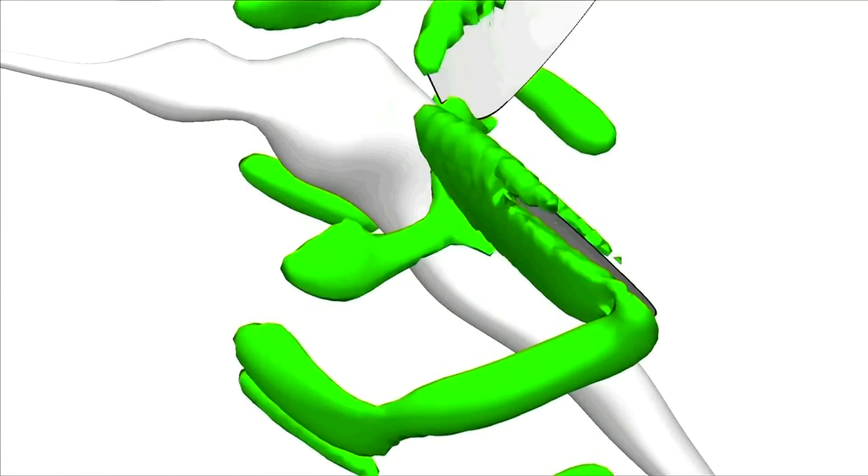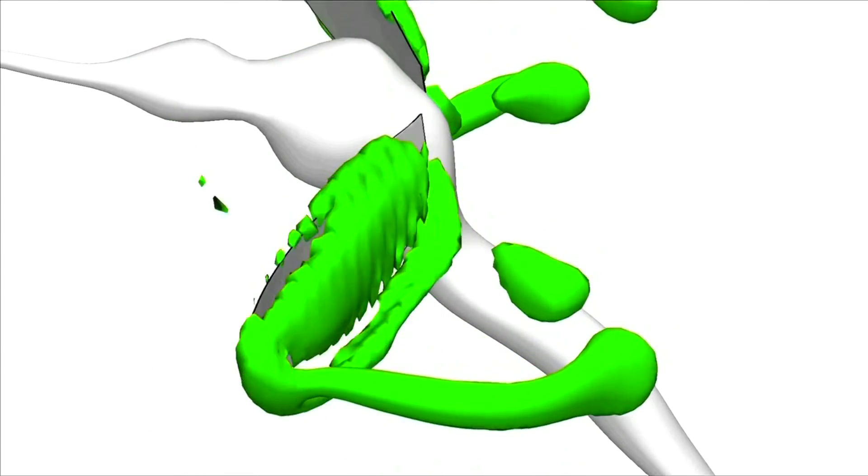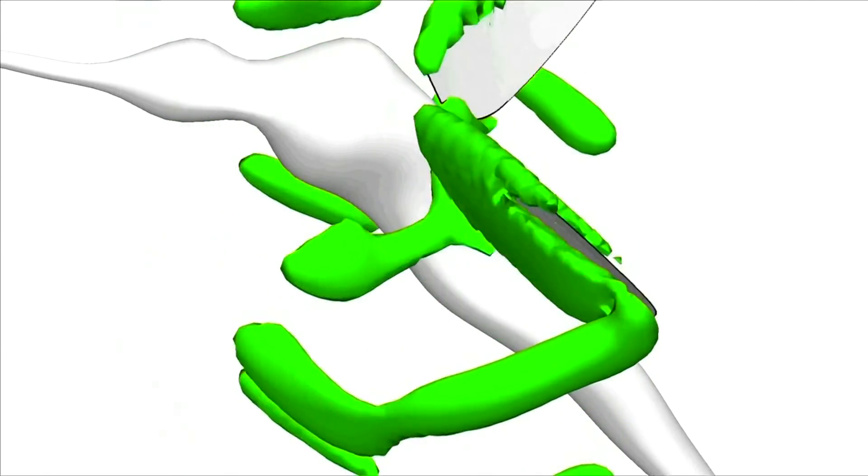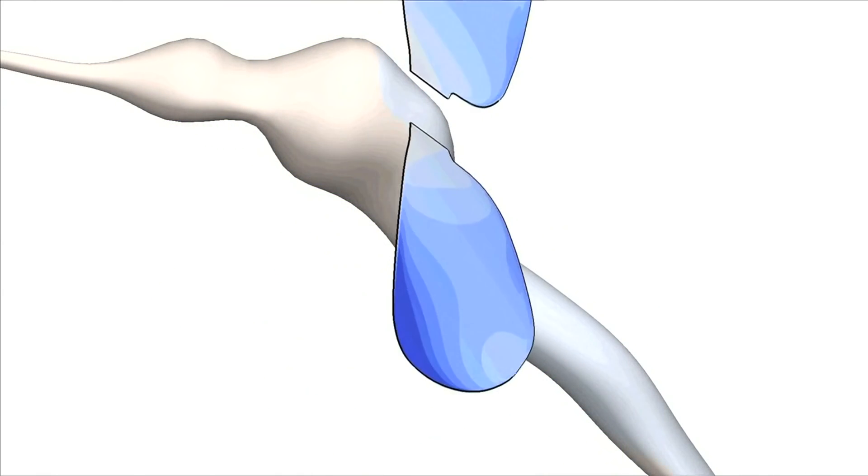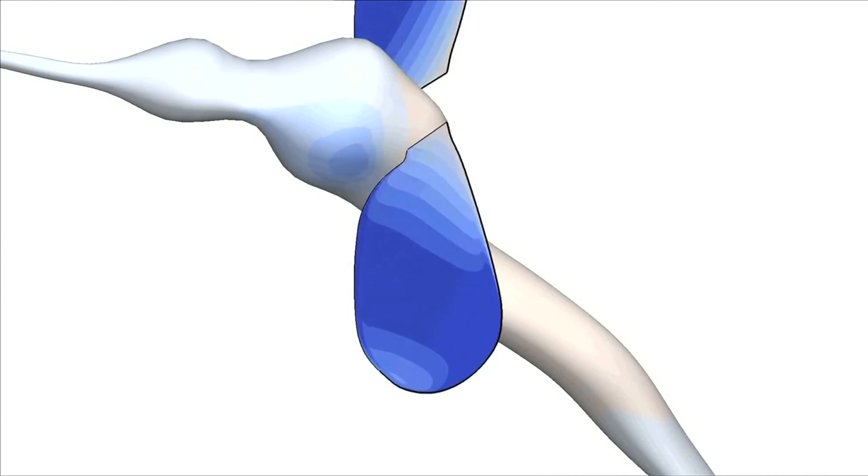The second two are a trailing edge vortex and rotational drag. And these last two are novel to mosquitoes. And they both rely on the really subtle, precise rotations of the wings at the end of each wing beat.